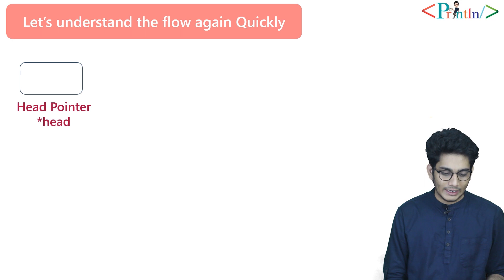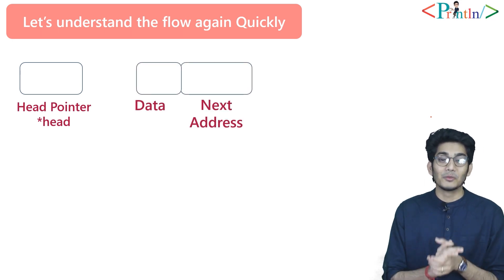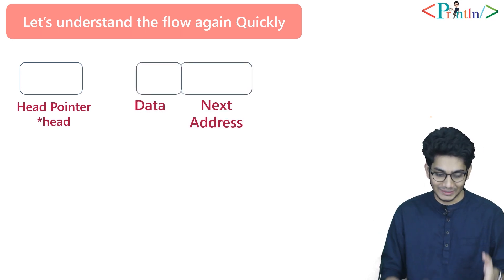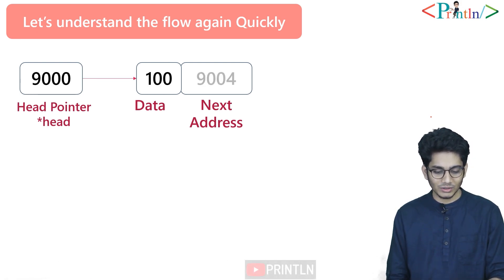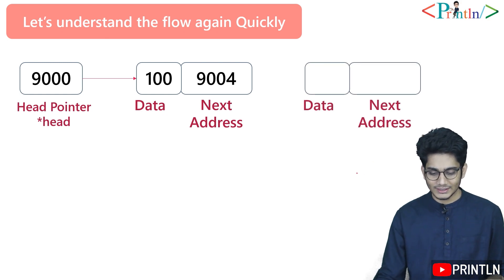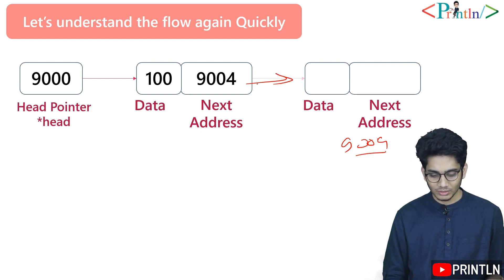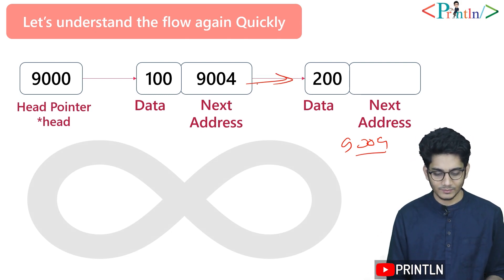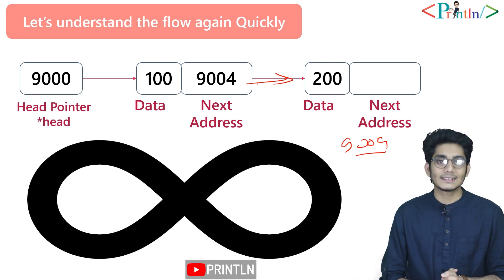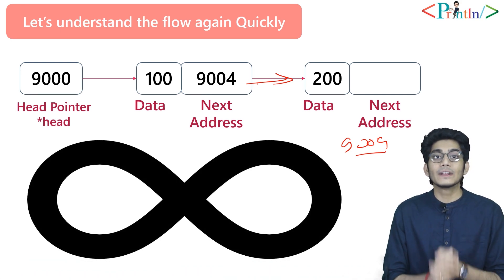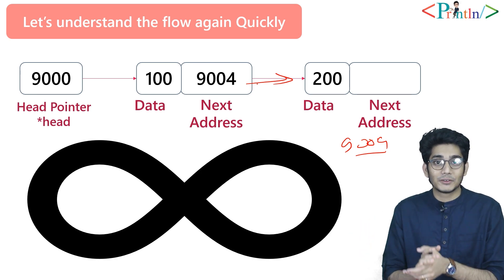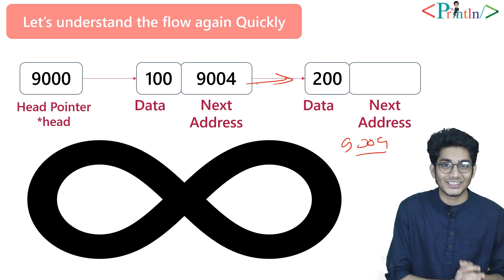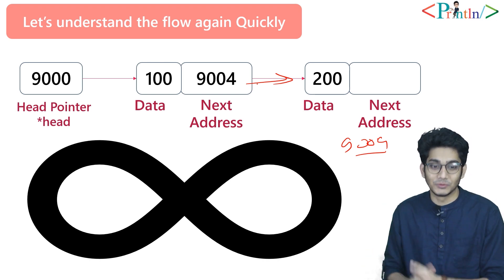Let's quickly go over the flow again. We have a head pointer, and its next address keeps pointing to the next node. We create another node, say at 9004, and it points to that node. We can add n numbers of nodes — in this case n is effectively infinite. As I mentioned in my previous video, a linked list is an infinitely finite data structure, so you can add as many nodes as you want.